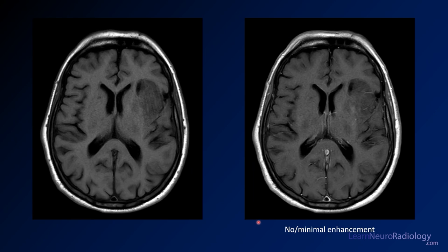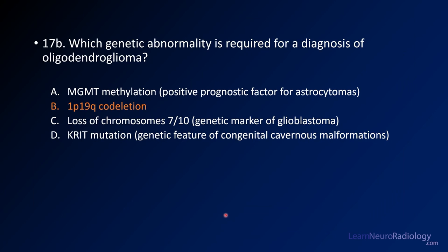On the pre- and post-contrast images, the lesion is a little ill-defined on T1, maybe a little cystic, and there's not much enhancement — perhaps a little hazy enhancement, but enhancement is not a predominant feature of this lesion. This is what an oligodendroglioma looks like.